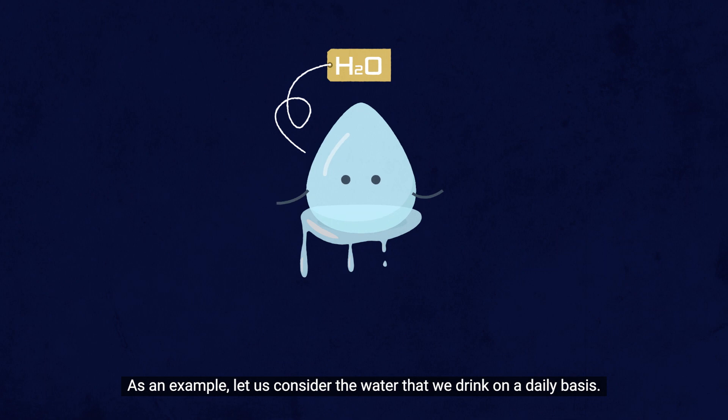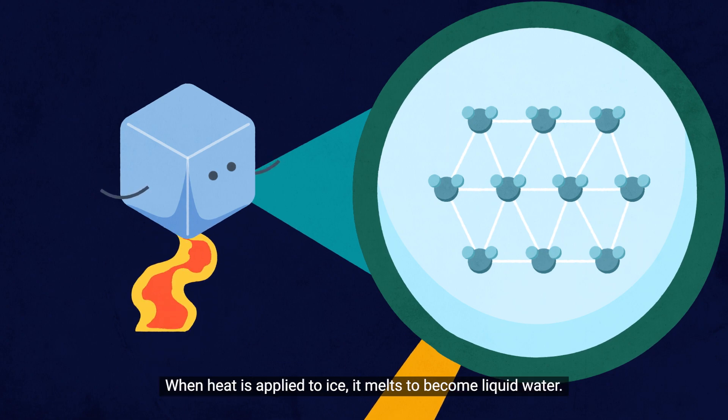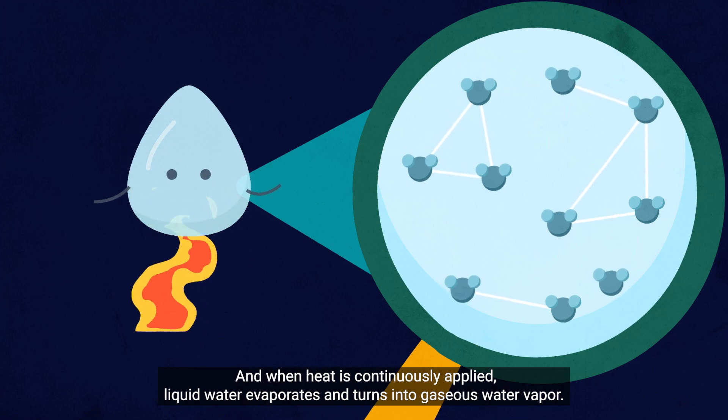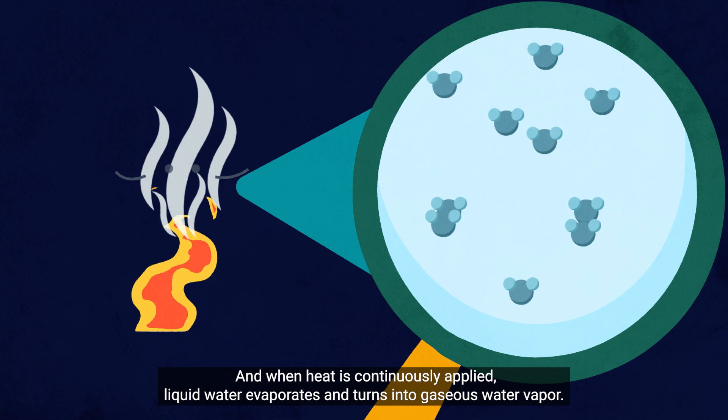As an example, let us consider the water that we drink on a daily basis. Frozen water, or ice, is at a solid state. When heat is applied to ice, it melts to become liquid water. And when heat is continuously applied, liquid water evaporates and turns into gaseous water vapor.